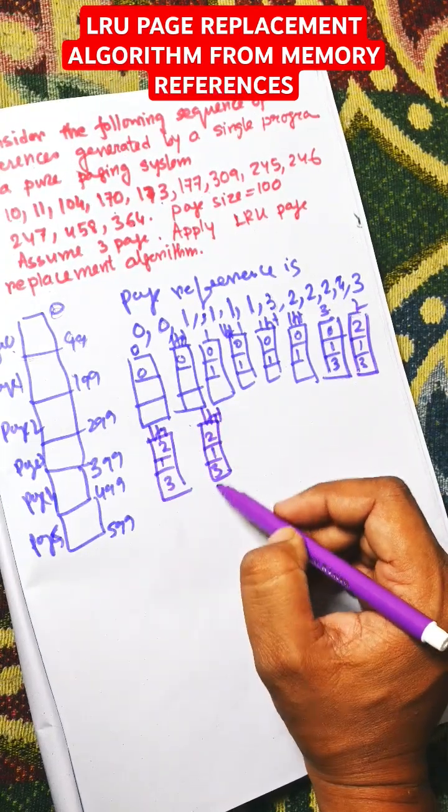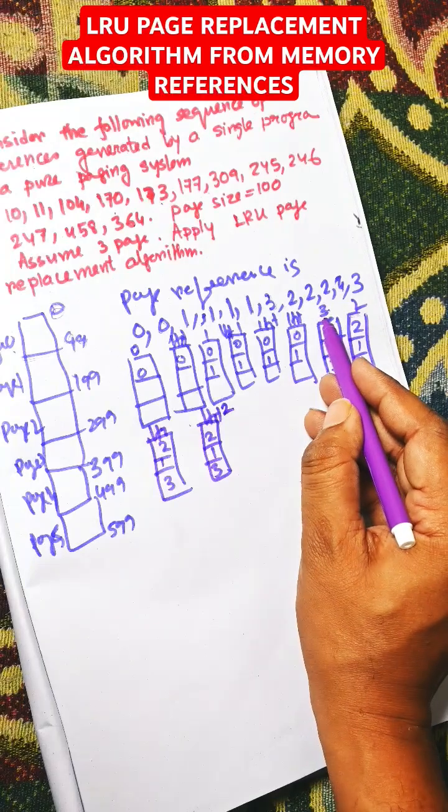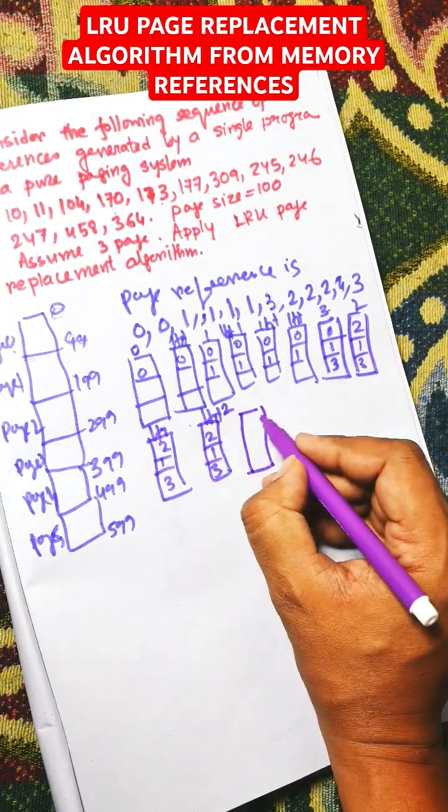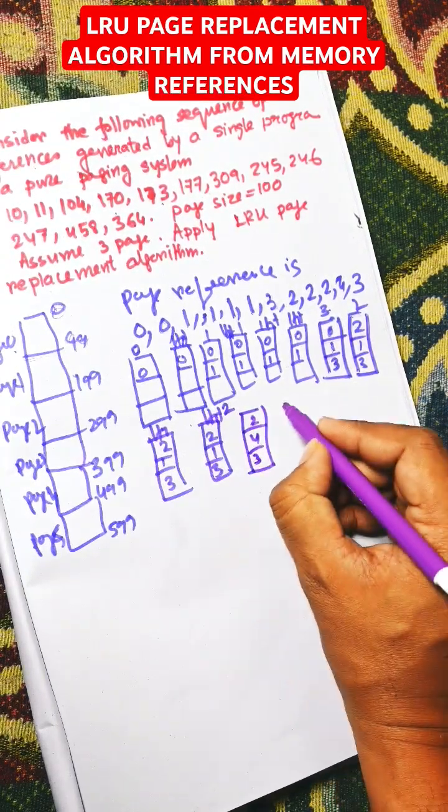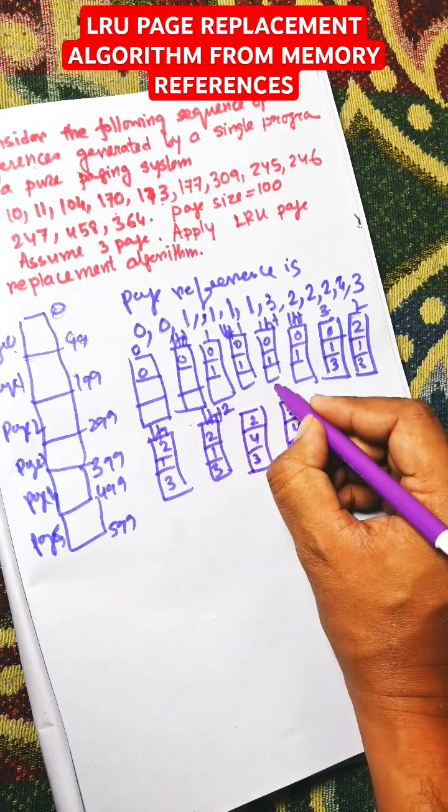4 will be replaced among 2, 1, 3. 2 is found here. 3 is not used for the longest period of time, so we have 2, 4, 3. Now 3 is available here, that is also hit.